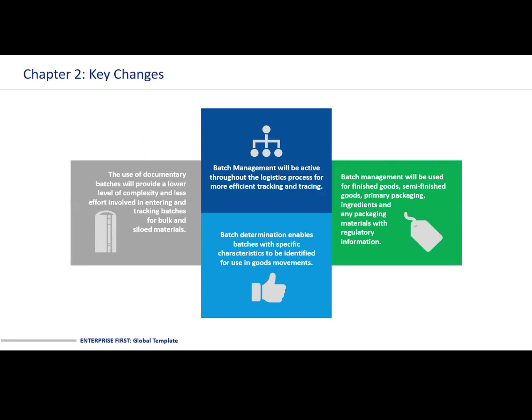There are some key changes to batch management. We've touched on documentary batches, which are the storage of siloed materials. We've got batch determination, which enables batches with specific characteristics to be identified for use in goods movements. Batch management will be active throughout the logistics process for more efficient tracking and tracing. Batch management will be used for finished goods, semi-finished goods, primary packaging, ingredients, and any packaging materials with regulatory information.